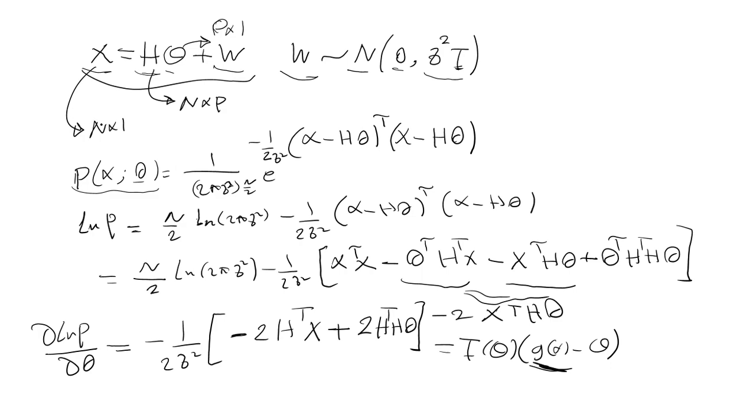as n by one vector, and H is called observation matrix n by P, and theta is the vector of parameters with dimension P. W is noise vector which is distributed as normal with zero mean and the diagonal covariance matrix sigma squared I. I stands for identity matrix, and here we consider the observation noise as a white process.